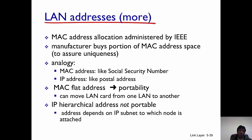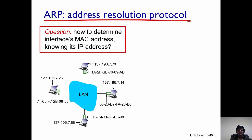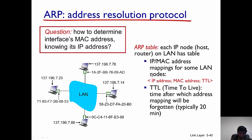MAC addresses are portable — when you move from one network to another your MAC address does not change. On the other hand, if you move from one network to another your IP address will change, depending on the subnet. So the next question is: how do you obtain a MAC address? If you know a host's IP address or the interface IP address, how do you determine its MAC address? The answer is you use the Address Resolution Protocol and the ARP table.